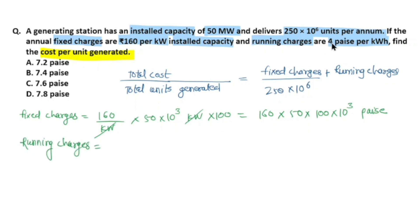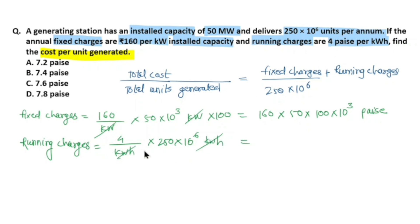Running charges are 4 paise per kilowatt hour. Kilowatt hour equals units, and we have 250×10⁶ units, so running charges = 4 × 250×10⁶ paise. The kilowatt hour units cancel, giving running charges = 4 × 250×10⁶ paise, which is already in paise.